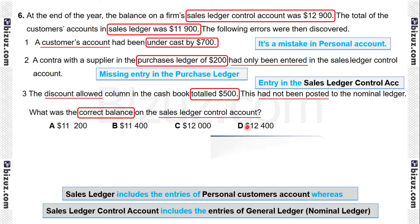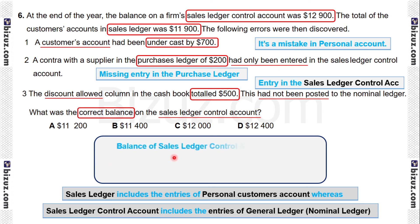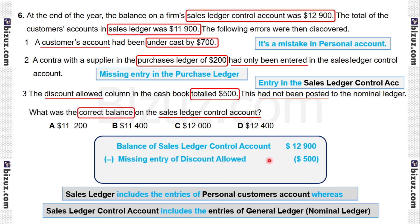The balance of the sales ledger control account is 12,900, as given in the question. Discount allowed is recorded on the credit side of the sales control account, so the discount allowed will be deducted from the balance. The missing entry of discount allowed 500 is deducted, giving a corrected balance of the sales control account of 12,400. This is our answer, represented by option D.